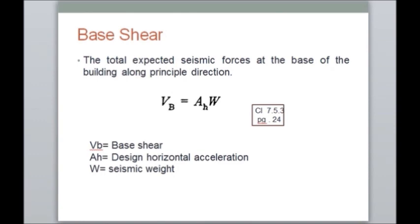To understand the procedure, first we have to understand what base shear is. The total expected seismic force at the base of the building along the principal direction is nothing but the base shear. As per IS 1893, it gives one equation: VB = Ah × W, where VB is the base shear, which is the seismic force at the base; Ah is the design horizontal acceleration; and W is the seismic weight.